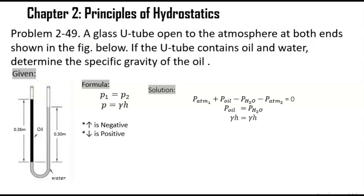So we are going to make an equation. This side is P1, and this side is P2. Since P1 is pointing downward, and the equal-height water segment cancels out, and P2 is pointing upward, we get: atmospheric pressure at 1 plus pressure of oil minus pressure of water minus atmospheric pressure at 2 equals zero. Then we cancel the atmospheric pressures, leaving us with: pressure of oil minus pressure of water equals zero.